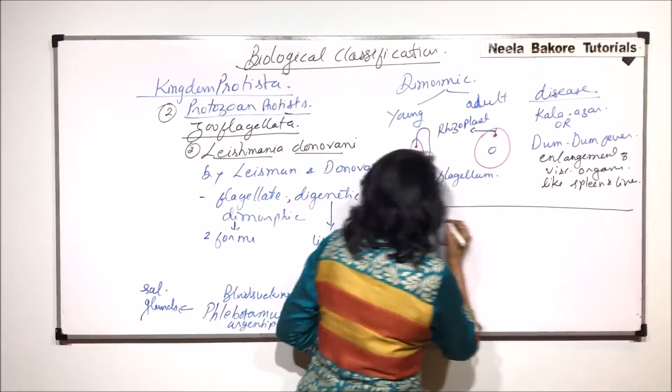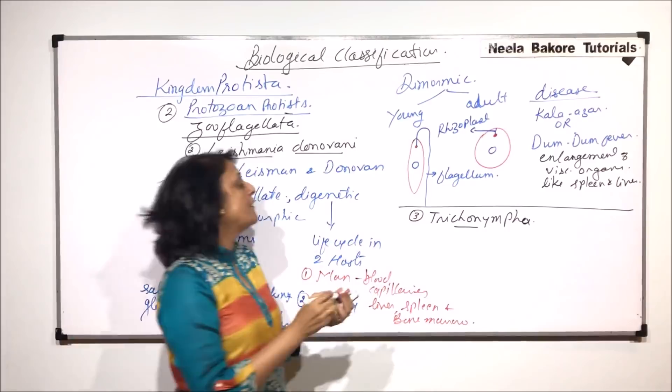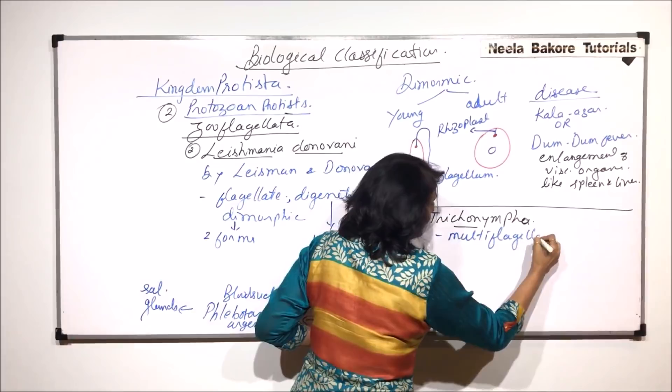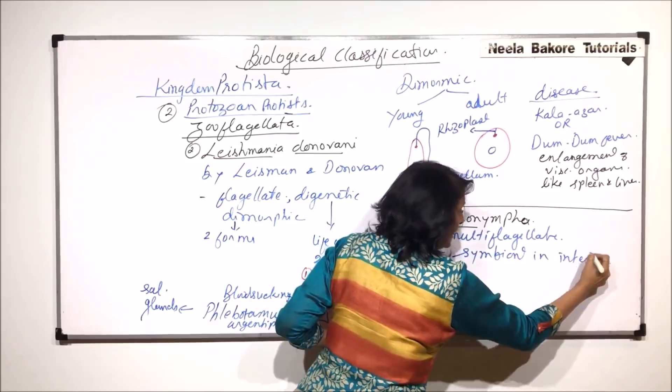And that is known as Trichonympha. Trichonympha is a multiflagellate organism. That means it has many flagella and it is found as a symbiont in the intestine of termites.